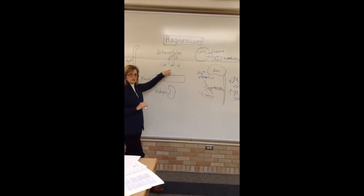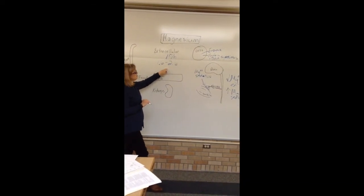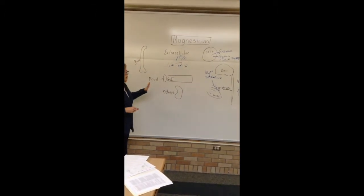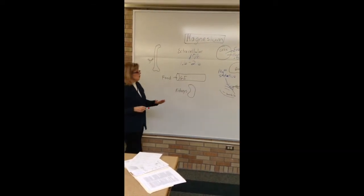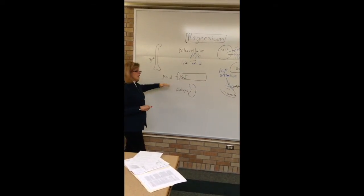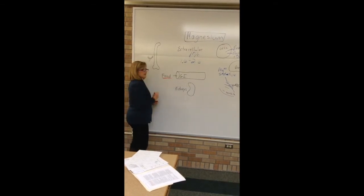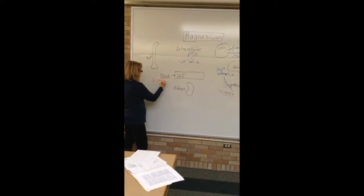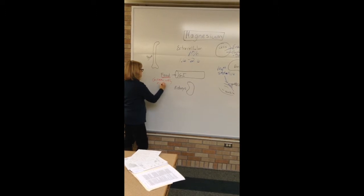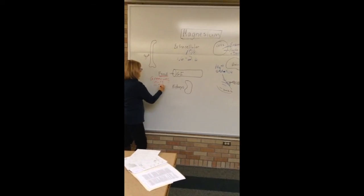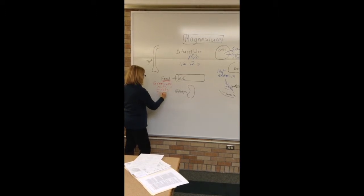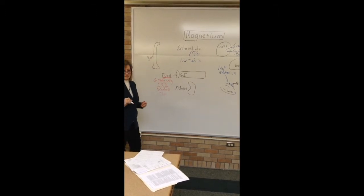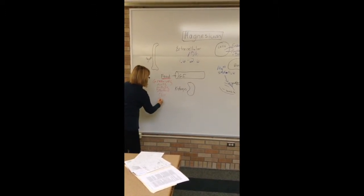That 1% extracellular found in our serum blood is what we're concerned about. What would cause us to have too low magnesium? We get our magnesium from foods — nuts, green vegetables, meats, seafood, even chocolate has a little magnesium in it, as well as grains.